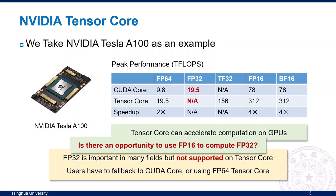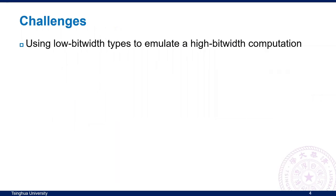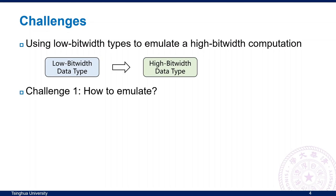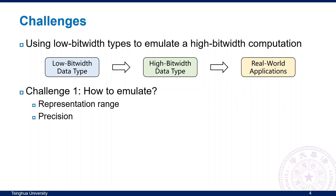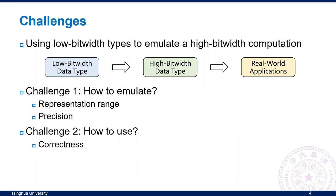So, is there an opportunity to use low bit-width data types, such as FP16, to compute high bit-width data types? To use low bit-width data types to emulate high bit-width computation, there are two major challenges. The first challenge is how to emulate a high bit-width data type, considering representation range and precision, which affects availability and accuracy. The second challenge is how to choose a proper data type for applications, guaranteeing end-to-end correctness without overflow or accuracy loss, while achieving higher performance.